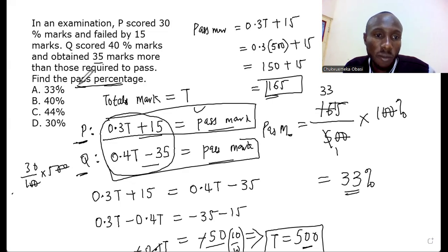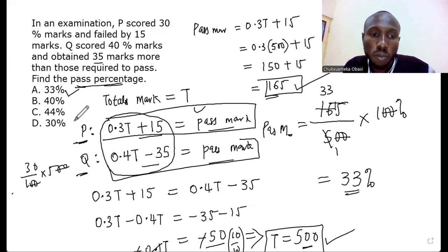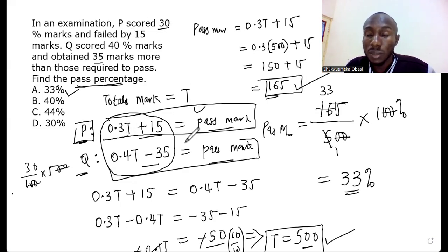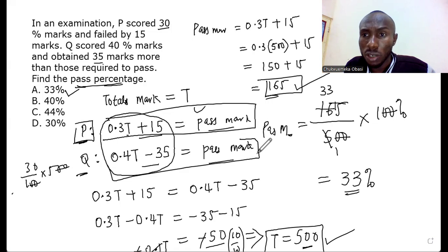To summarize: if asked for the pass mark, it's 165; if asked for the total, it's 500; if asked for P's score, it's 150 — which is 30% of 500. That's the end of this question. I hope it's clear — let me know in the comments how much this video helped you. See you in the next video. Have a wonderful day and God bless you. Bye!